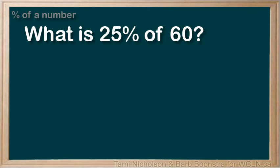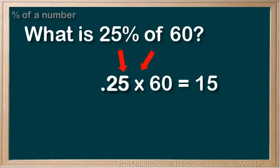.25. The word of is often used to mean times, so the question becomes .25 times 60 equals 15. Either method can be used to solve the problem.